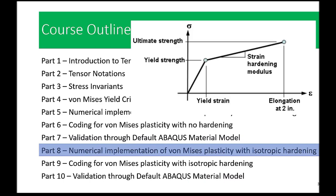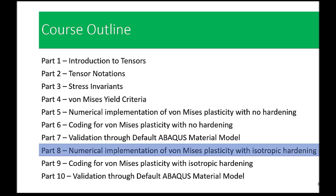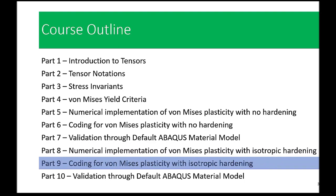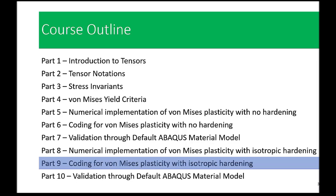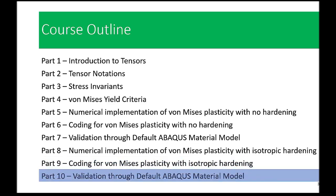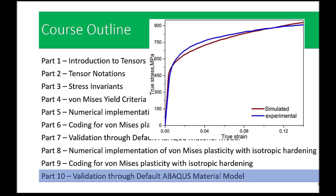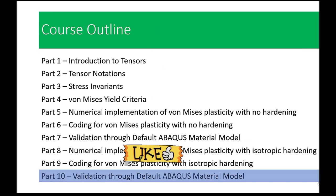In part eight we will delve into the implementation of Von Mises plasticity with isotropic hardening — a crucial concept we will break down step by step. Part nine is where we get hands-on again, coding Von Mises plasticity with isotropic hardening. Finally in part ten we will validate our implementation through a thorough comparison with the default Abaqus material model, ensuring your custom model is reliable and produces accurate results.